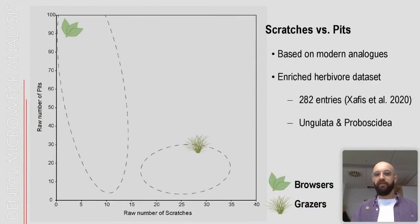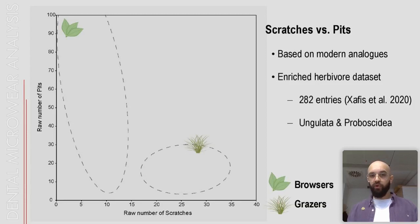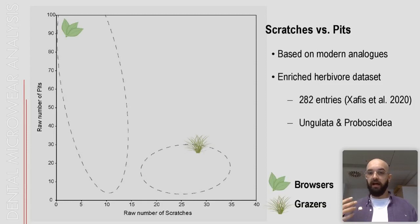For the interpretation of my data I used a simple scatter plot of scratches versus pits with two distinct morphospaces. The left morphospace represents the browsing morphospace, and the smaller morphospace on the right represents the grazing morphospace. These two confidence ellipses were created based on potential modern analogues through a dataset I created from scratch, which included both proboscidean and other herbivore ungulate taxa.